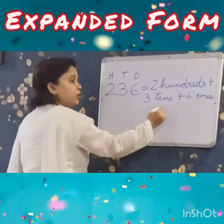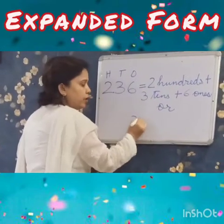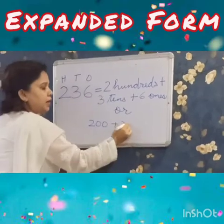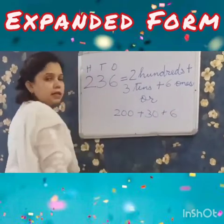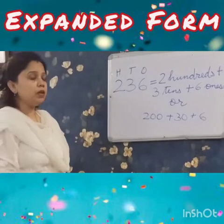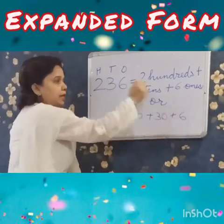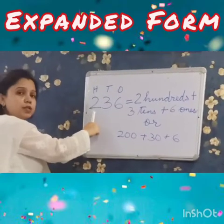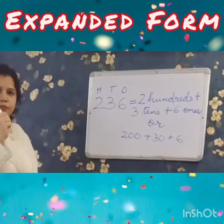Or you can also write in numbers: 2 100's are 200, plus 3 10's are 30, plus 6 1's are 6. When you read the number, you read it as 200, 30, 6 — we read this number as 236. Clear?